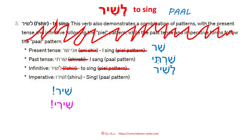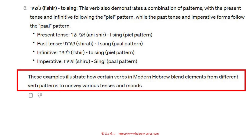The best was after these three completely wrong examples, ChatGPT adds: 'These examples illustrate how certain verbs in modern Hebrew blend elements from different verb patterns to convey various tenses.' Well, that is the biggest BS I have ever read. Let's assume my ChatGPT prompt was not perfect. Let's try again, correct it, tell him what is wrong, and see how he reacts.